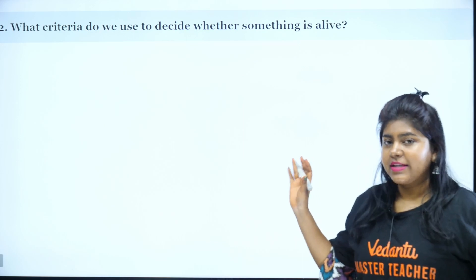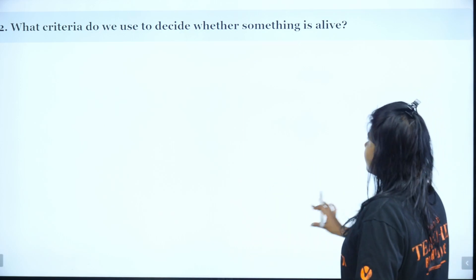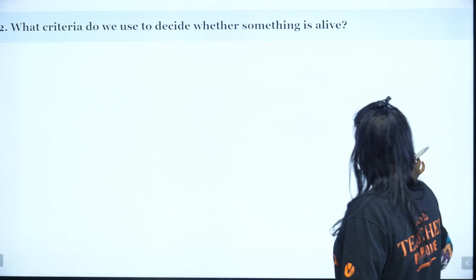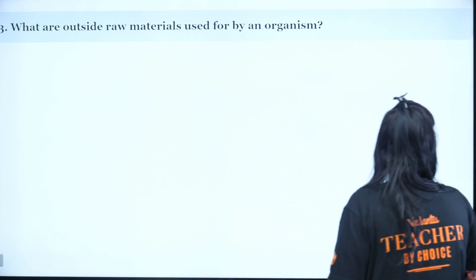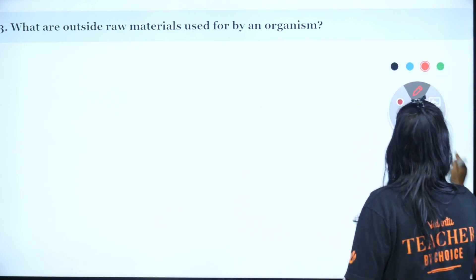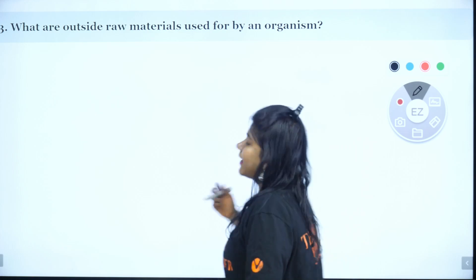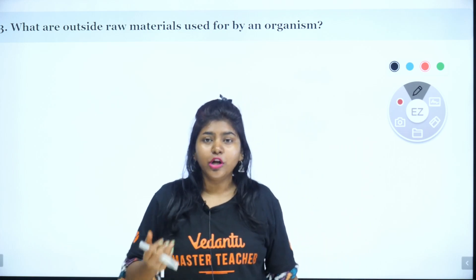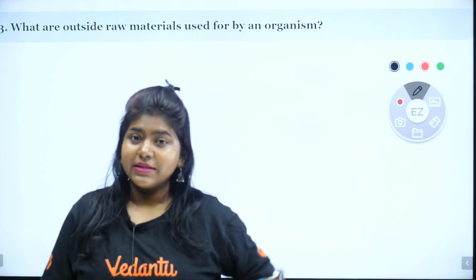That's the second question. Now let's go to the third question. What are the outside raw materials which are needed for an organism? The outside raw materials are usually relevant to plants.